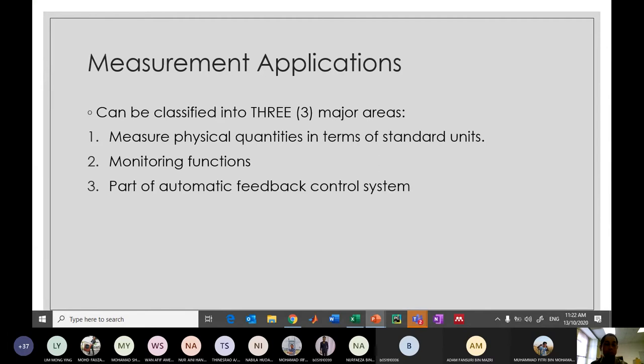Measurement application can be classified into three major areas. Number one, when you want to measure physical quantities, this is the most common one. When we want to measure something, we must refer it to a standard. Why do we need to refer to a standard? Because when other people are doing similar measurements by referring to the same standards, you ensure that you and the other person are measuring the same thing. Without a standard, you and I might measure something and find our values very different and we don't know how to compare them. Number two is monitoring function when we want to monitor a certain measurement. And number three is part of automatic feedback control systems.